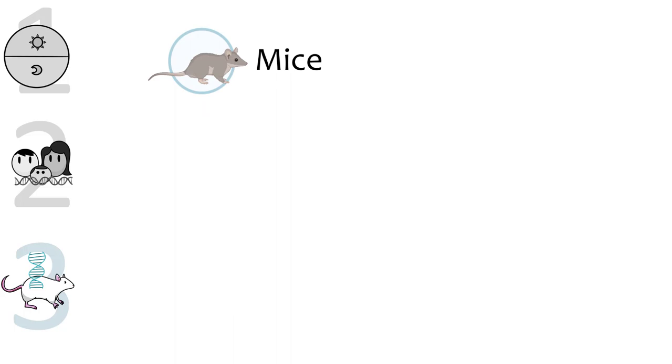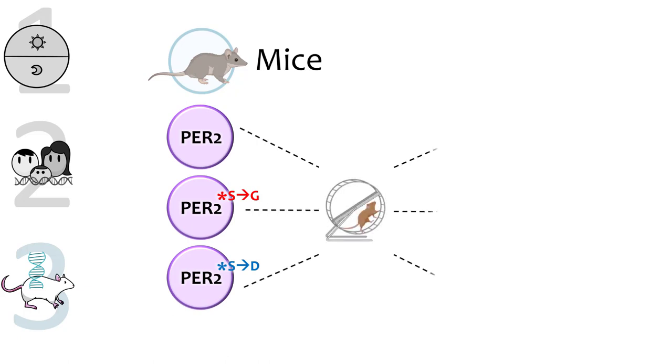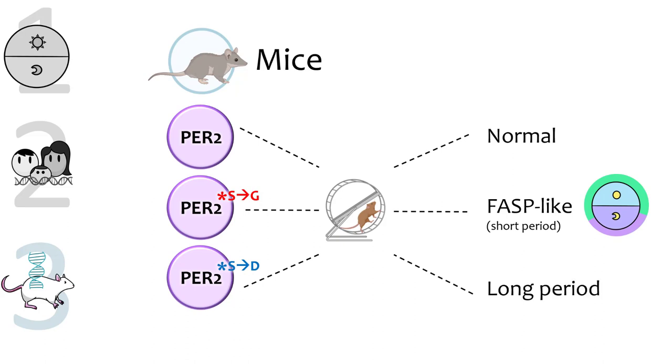To characterize the PER2 S to G effects in vivo, the researchers began to study it using transgenic mice. Mice were made to express the normal human PER2, the S to G variant, or a variant in which S was changed to aspartic acid or D to mimic phosphorylation. In behavioral tests, the wheel-running activity rhythms of these mice showed that the PER2 S to G mutant's activity rhythm had a short circadian period, similar to human FASP, while the S to D mutation caused a long period.